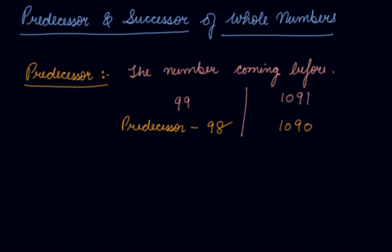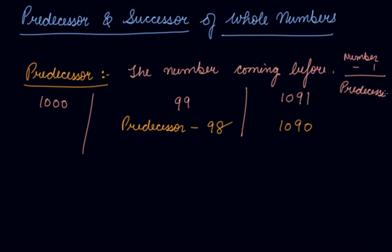If I talk about calculating the predecessor of 1000 — what comes before 1000? If you subtract 1 from it, that means number minus 1 is your predecessor. So, what comes before 1000? The predecessor is 999.